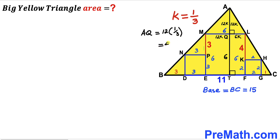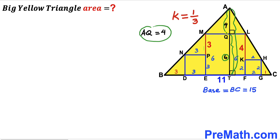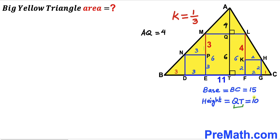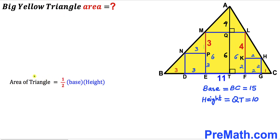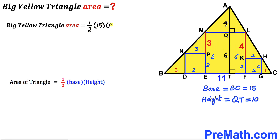Thus the AQ length turns out to be 4 units. Now we calculate the full height AT. We know QT is 6 and AQ is 4, so 6 + 4 = 10 units. The height of the triangle is 10 units. Now for our final step, we calculate the area of the big yellow triangle ABC using area equals one half times base times height, where the base is 15 and the height is 10.